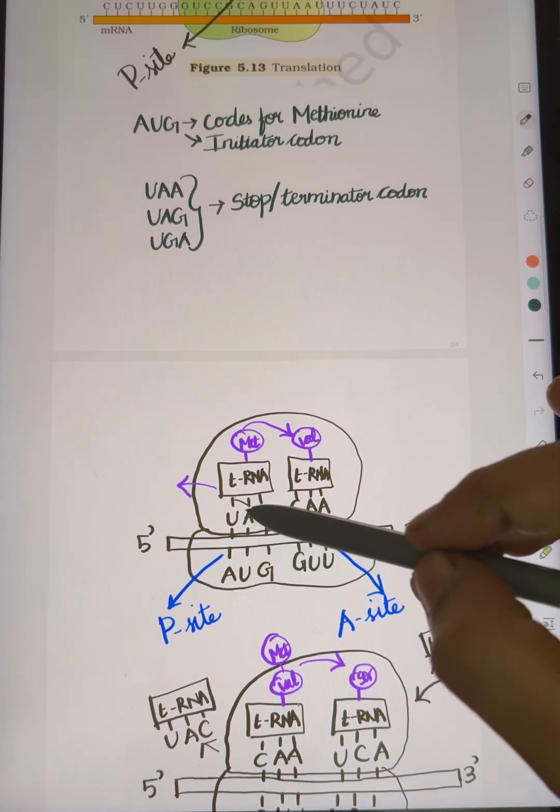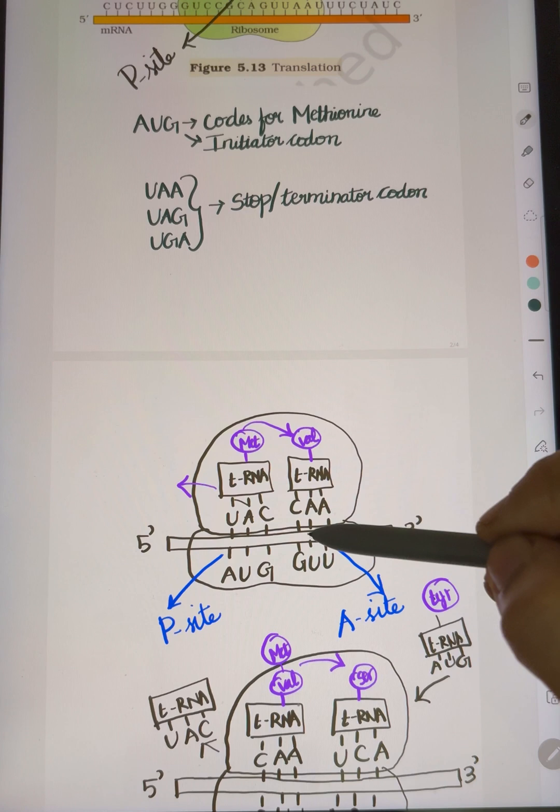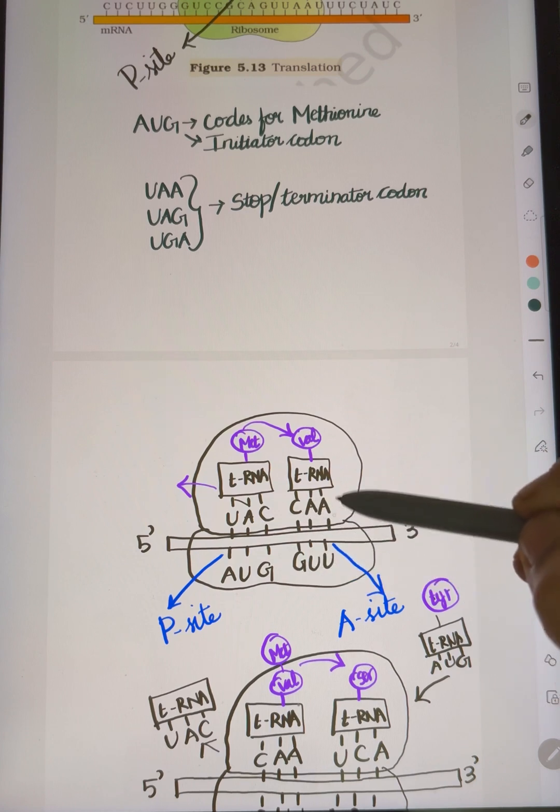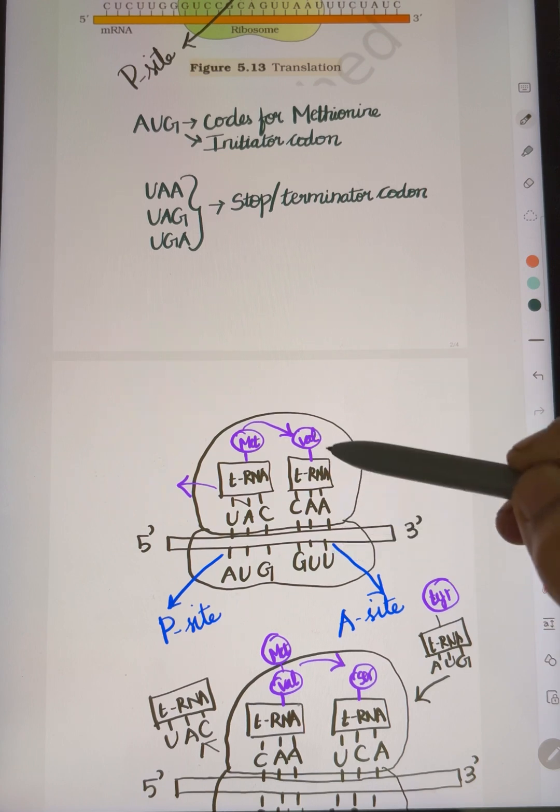The first tRNA occupies the P-site. The second tRNA enters the A-site. It is complementary—the anticodon tRNA binds. Each one carries an amino acid that will code for the corresponding position.